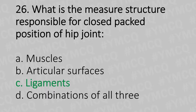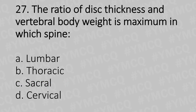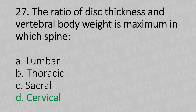Moving to our 27th question. The ratio of disc thickness and the vertebral body height is maximum in which spine? Option A: Lumbar. Option B: Thoracic. Option C: Sacral. Option D: Cervical. And the answer is Option D: Cervical.